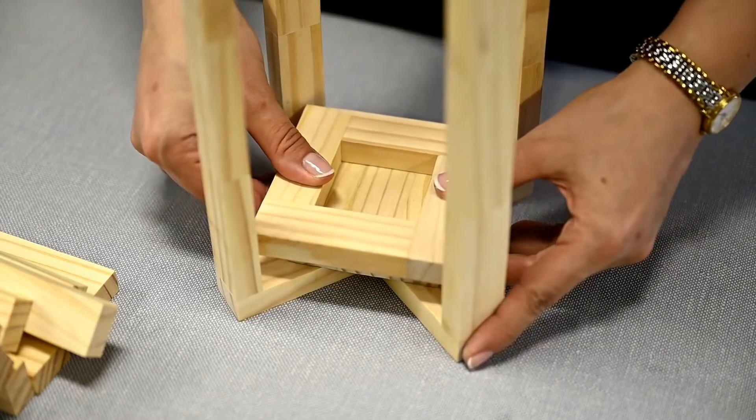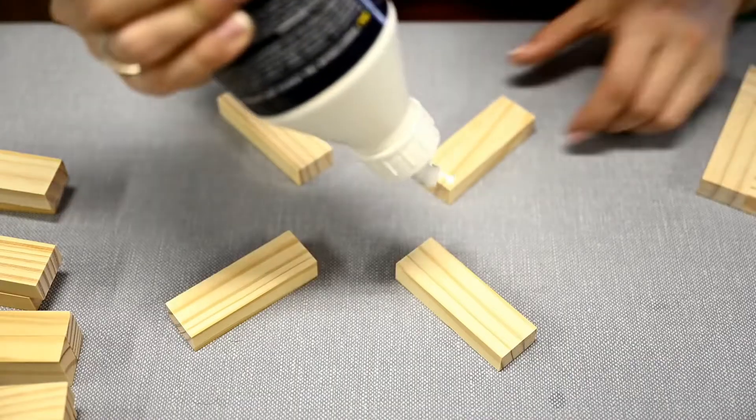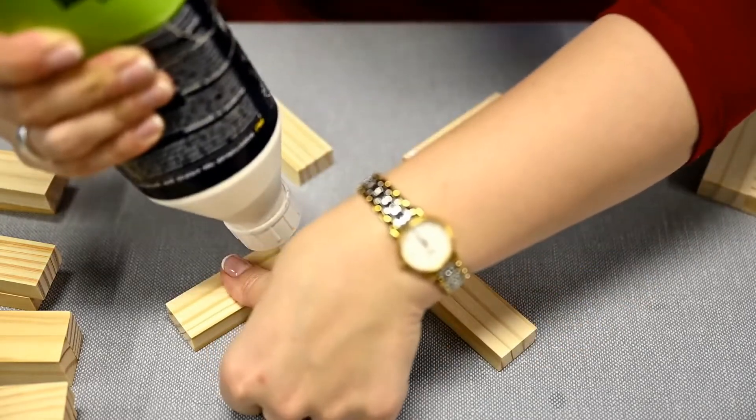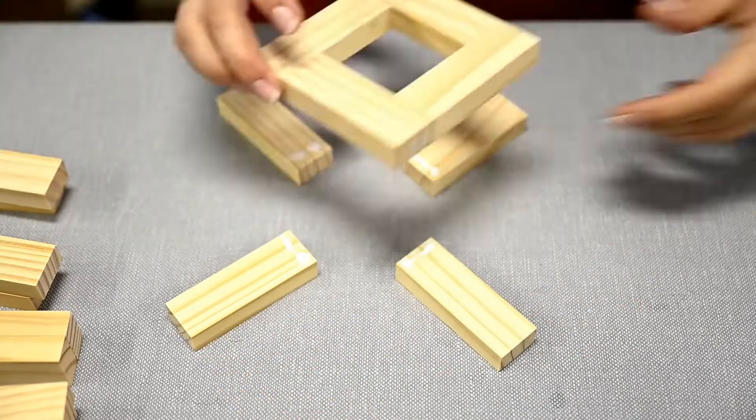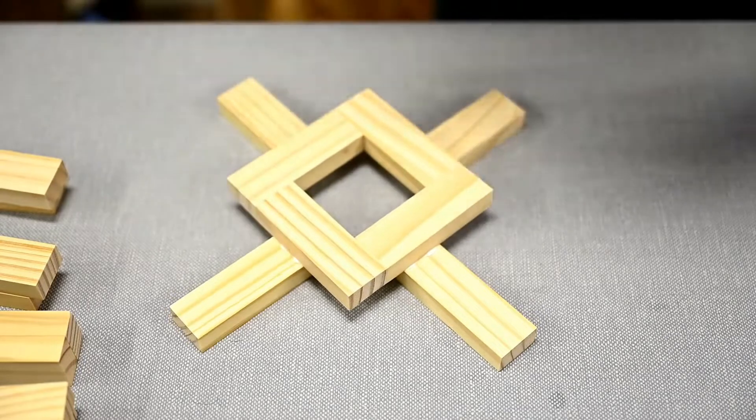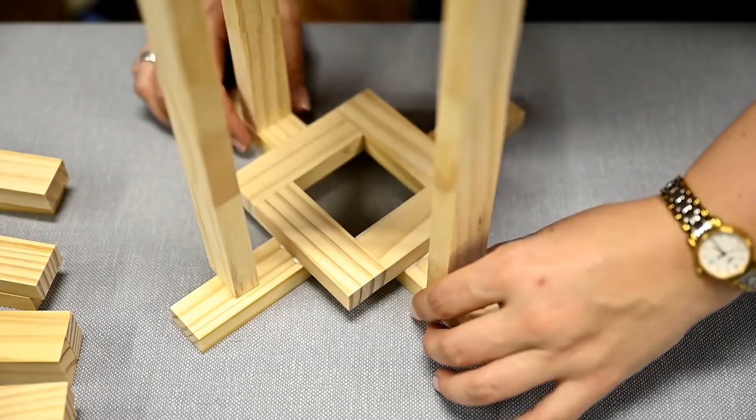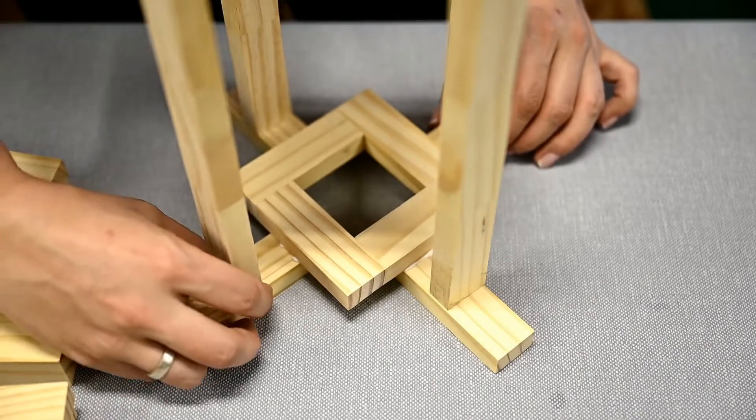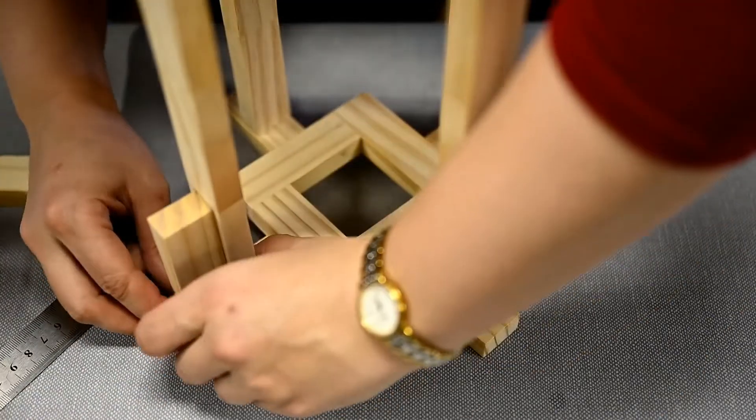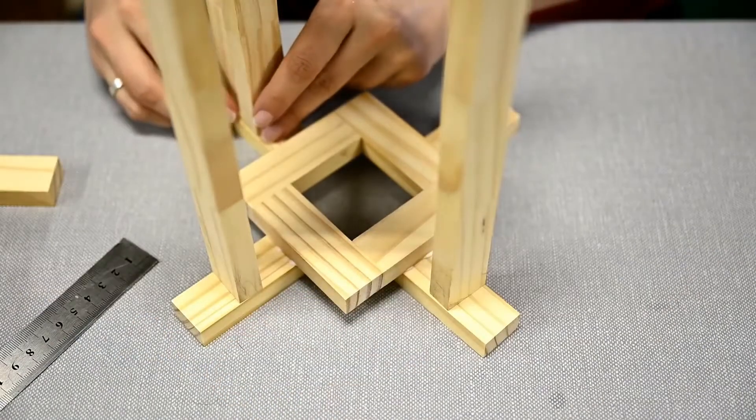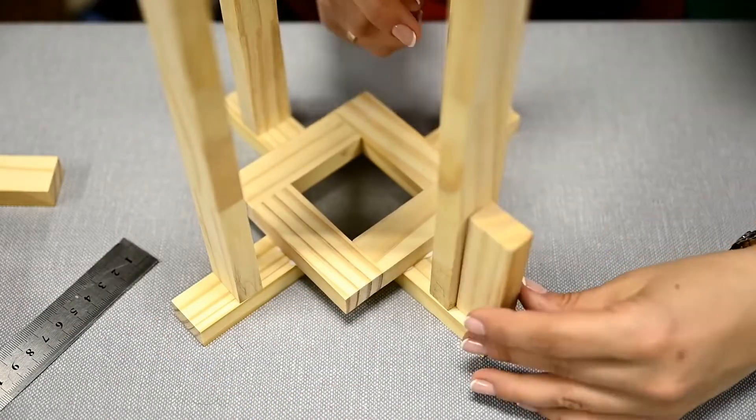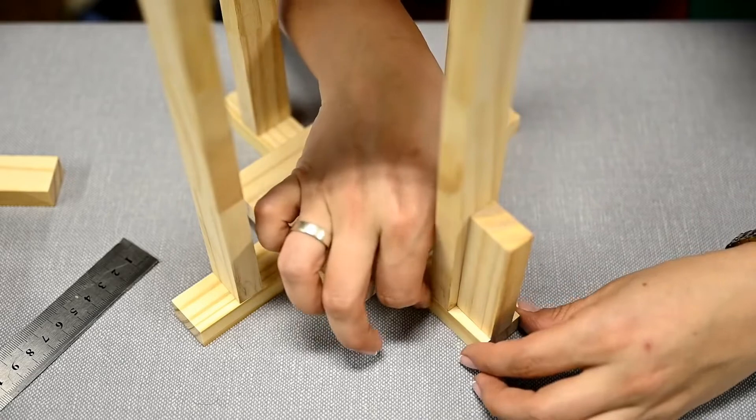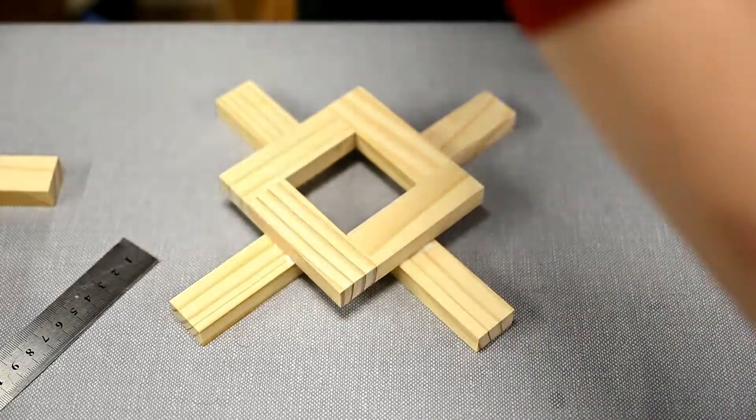To make the top I'm placing four blocks in a kind of a cross with some space in the middle and attaching the large square part to it. In order to position the blocks evenly I'm placing the lantern body upside down over the top base and checking that all the cross blocks are exactly under the body side parts and also have the same length. I'm using an extra block to check this.